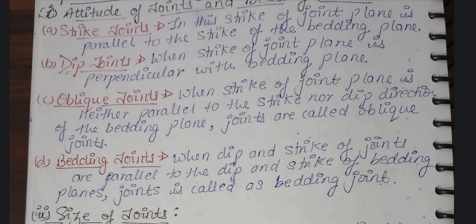Strike joints are parallel to the bedding plane. Dip joints are perpendicular to the bedding plane. Oblique joints are neither parallel nor perpendicular — they are at an angle to the bedding plane. Bedding joints are parallel to the bedding plane. I suggest you learn these four in respect of their strike orientation.